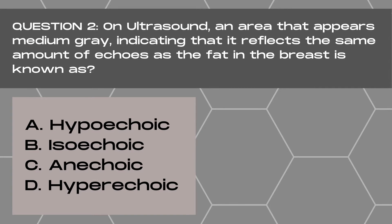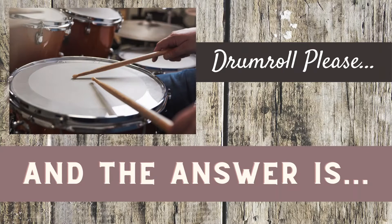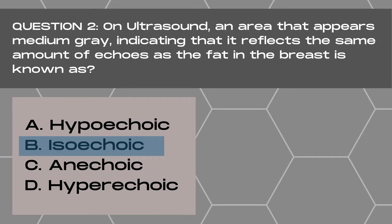Question 2. On ultrasound, an area that appears medium gray, indicating that it reflects the same amount of echoes as the fat in the breast, is known as: A. Hypoechoic, B. Isoechoic, C. Anechoic, or D. Hyperechoic. And the answer is B. Isoechoic. An isoechoic area on ultrasound is a mass or structure or layer that has the same number of echoes as the fat in the breast.